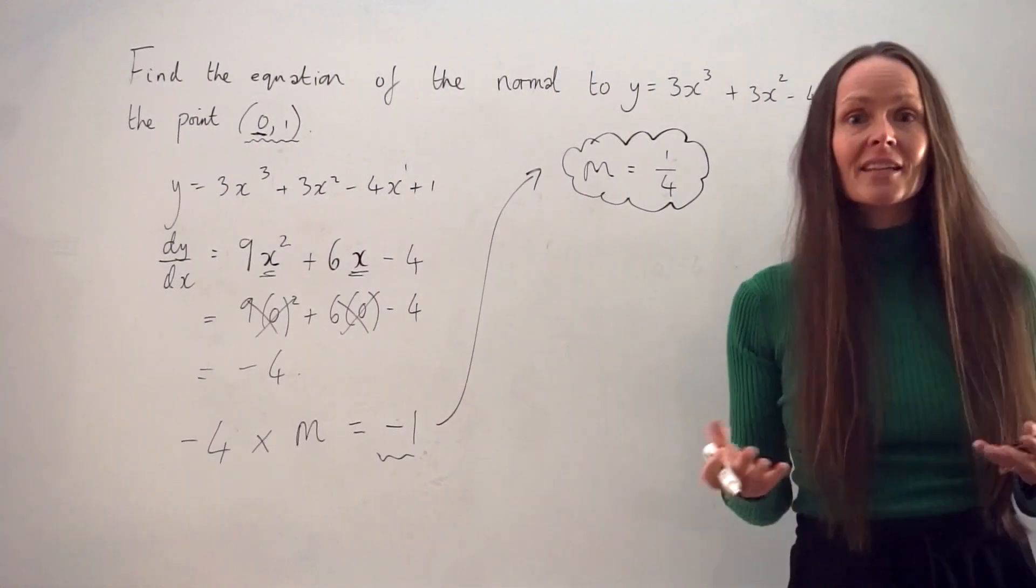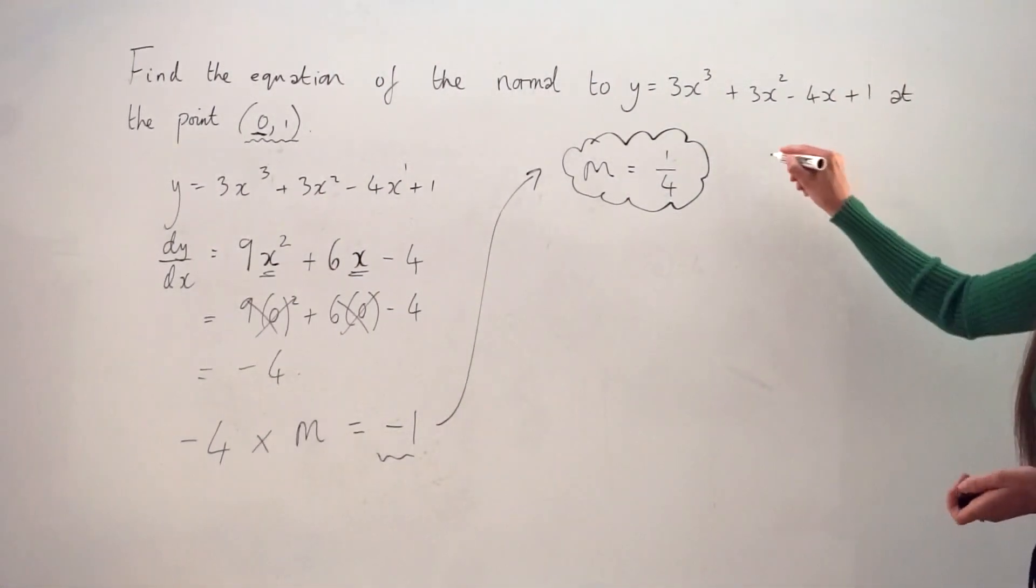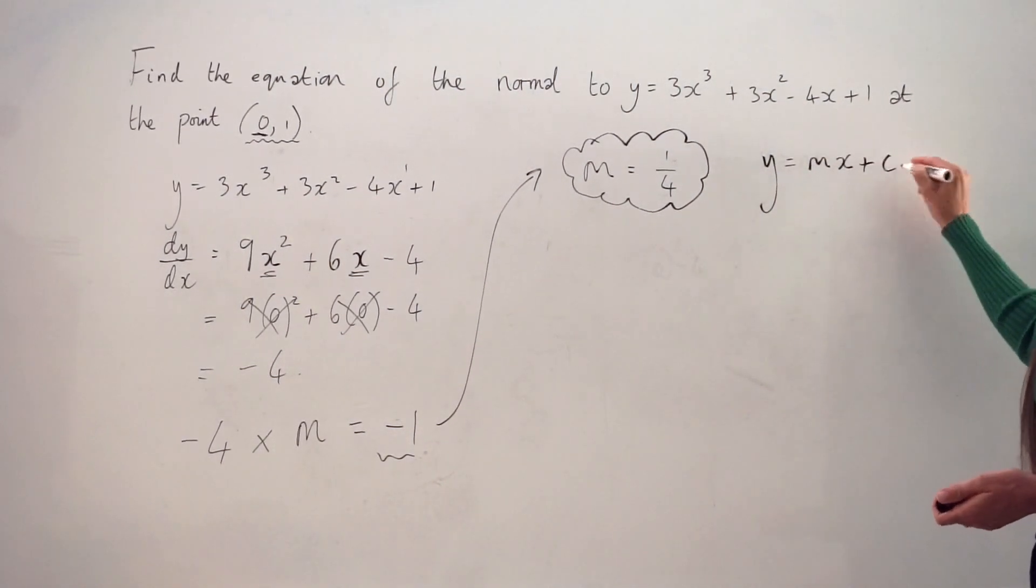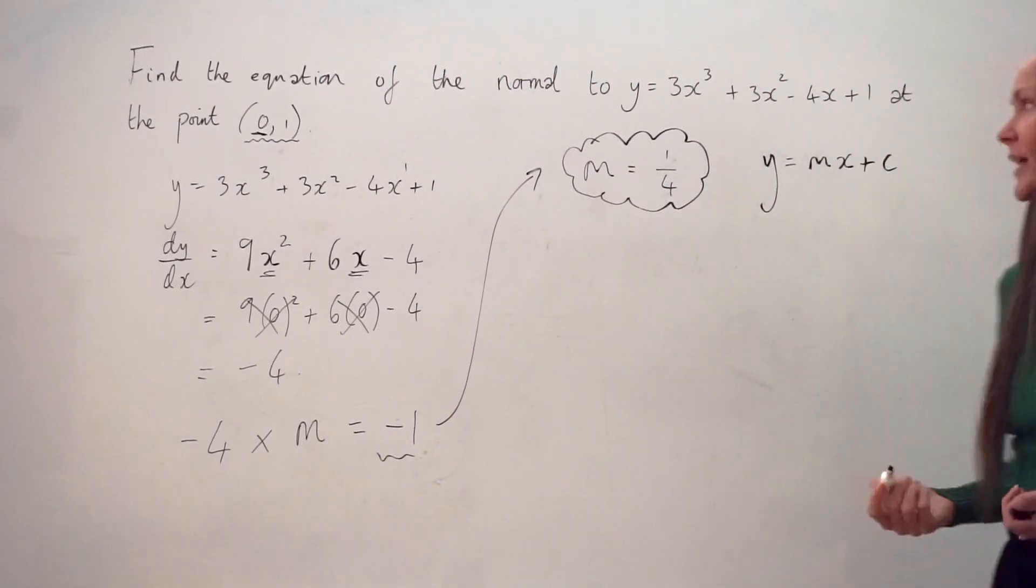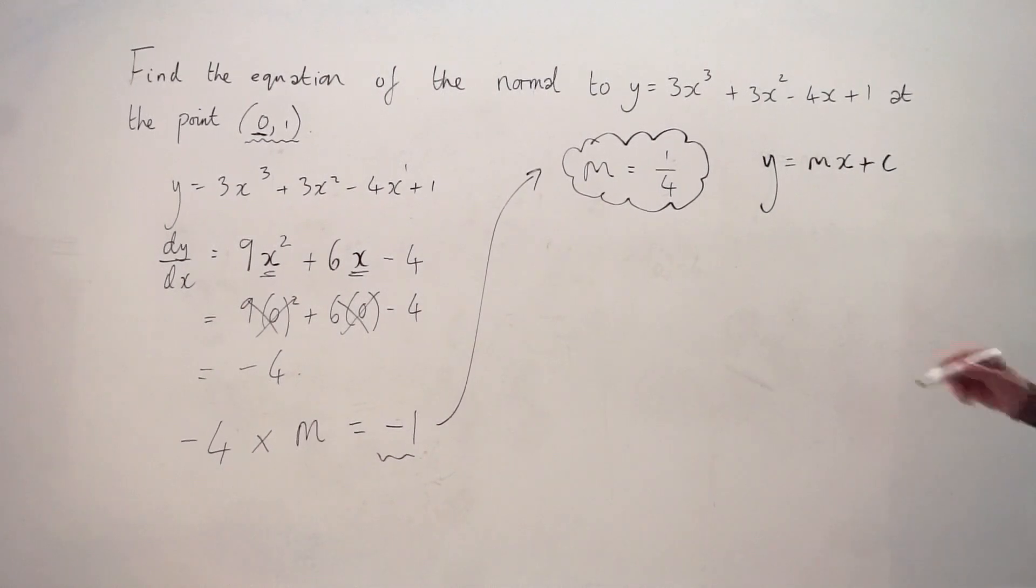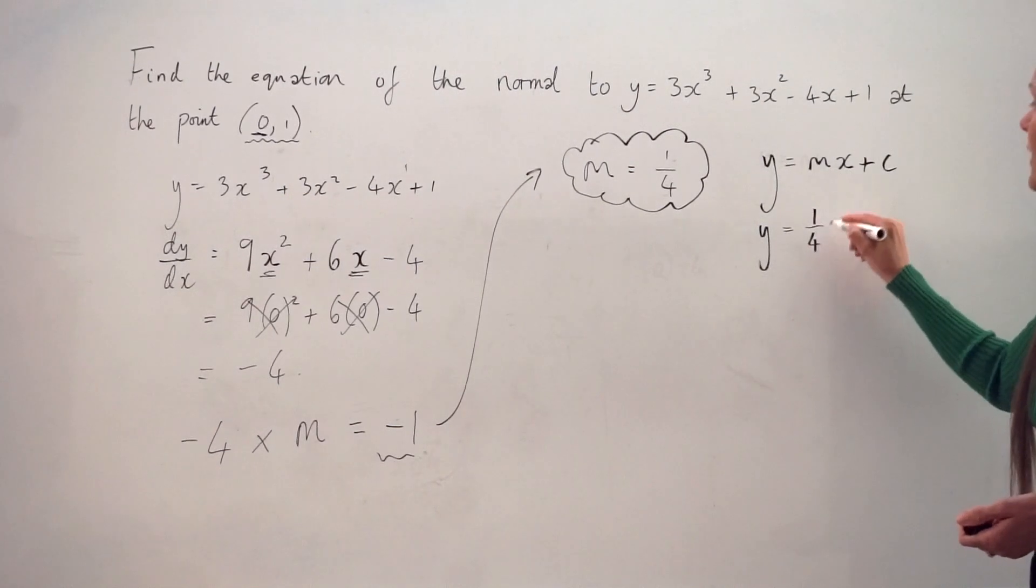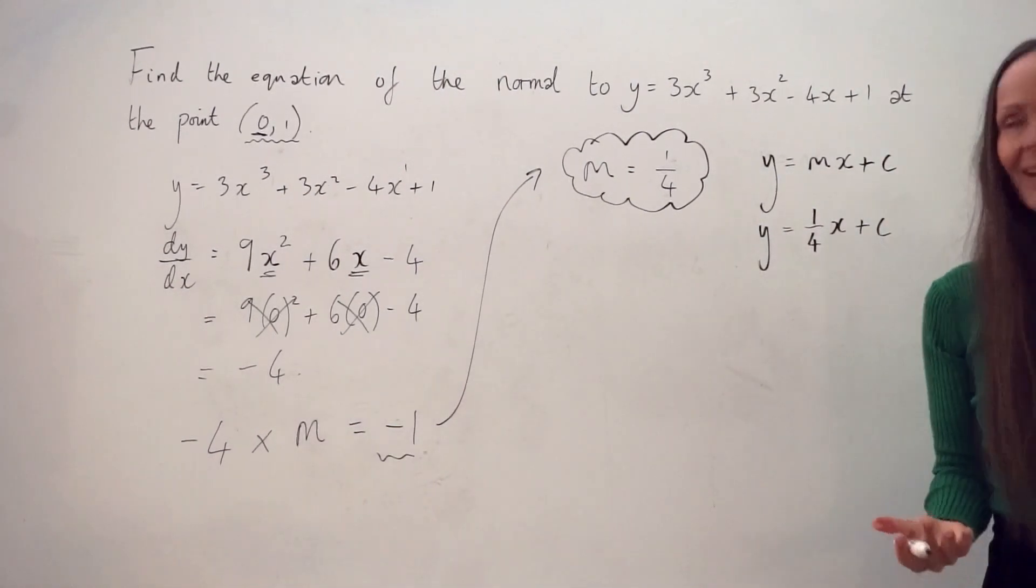So if you think of the standard equation of a straight line, as remember the normal is a straight line, it looks like this: y = mx + c. And we have m, the gradient, we just worked it out. It's a quarter. So this is what the equation of the normal looks like so far.